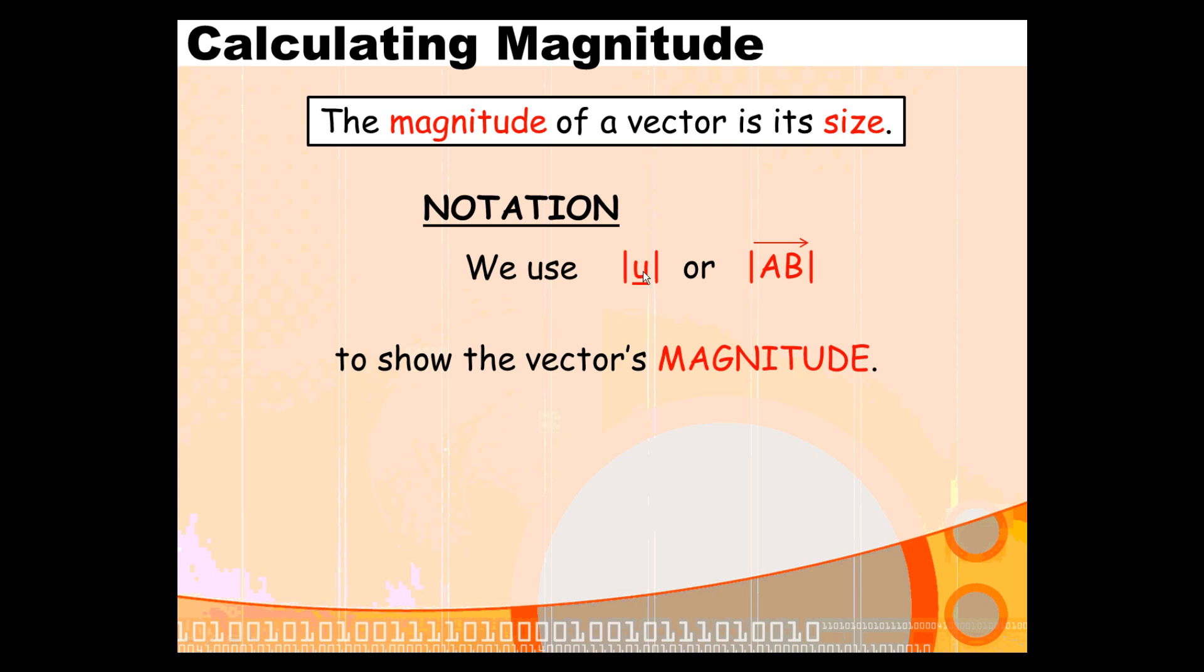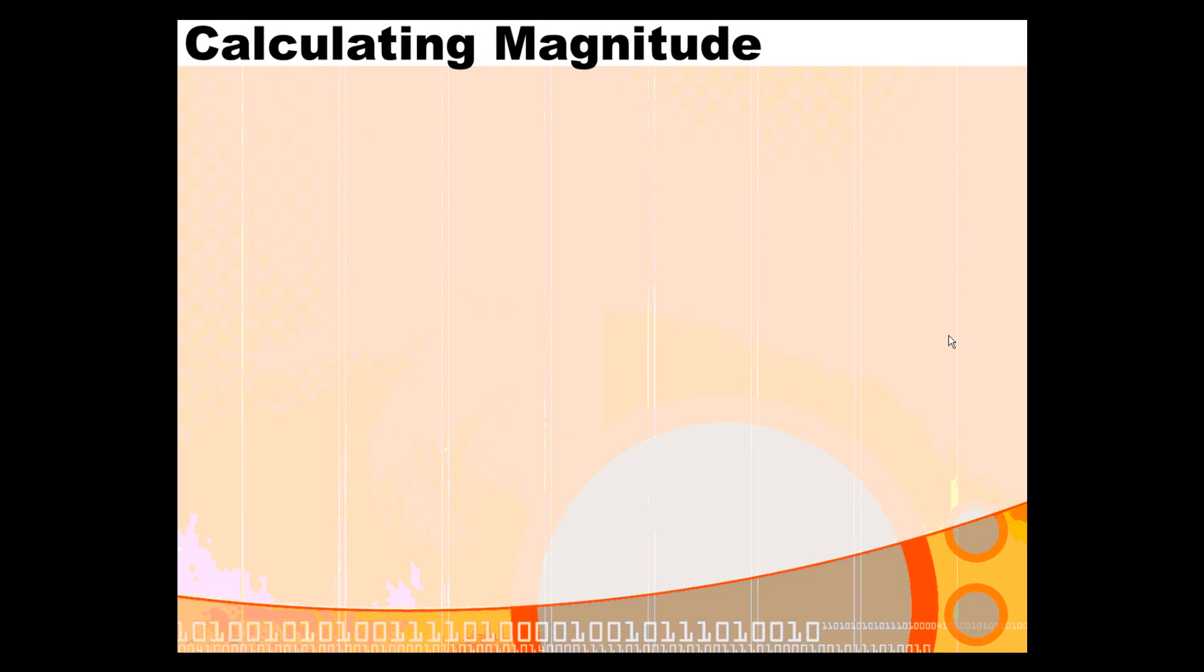Both of these will involve vertical lines either side of the vector's name. You will either have the vector named by a single letter with two vertical lines either side of it, or you will have the start point and the end point with a direction arrow, and that will be bounded by two vertical lines as well. So both these types of notation are used to describe a vector's magnitude.